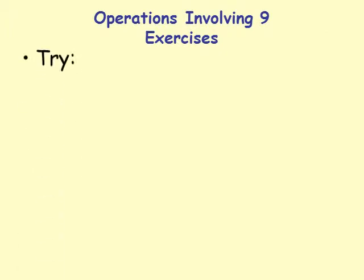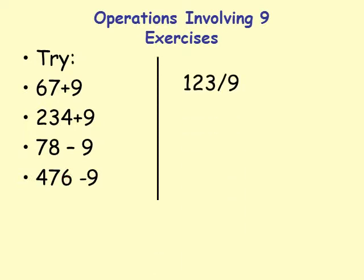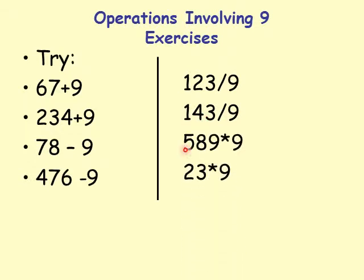Some exercises: try 67 plus 9, 234 plus 9, 78 minus 9, 476 minus 9, 123 divided by 9, 143 divided by 9, and 589 times 9.